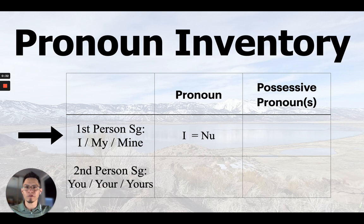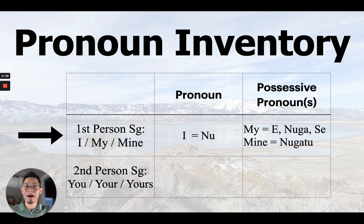The normal pronoun I is N. The possessive pronouns — my — there are three of them that we looked at: E, nga, and C, which we saw last week was actually probably just a combination of su along with E. And mine is nga.